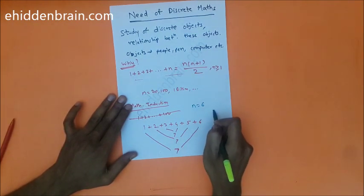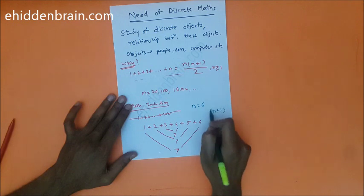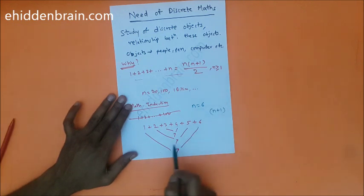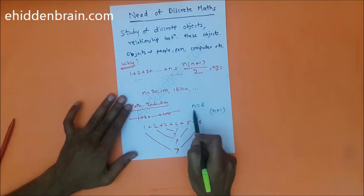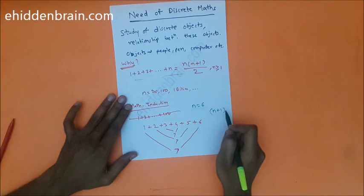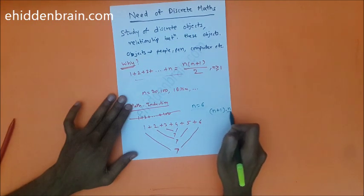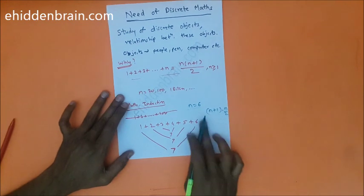What is n here? n is six. But in terms of n, you got n plus one. How many times did you get n plus one? Three times.